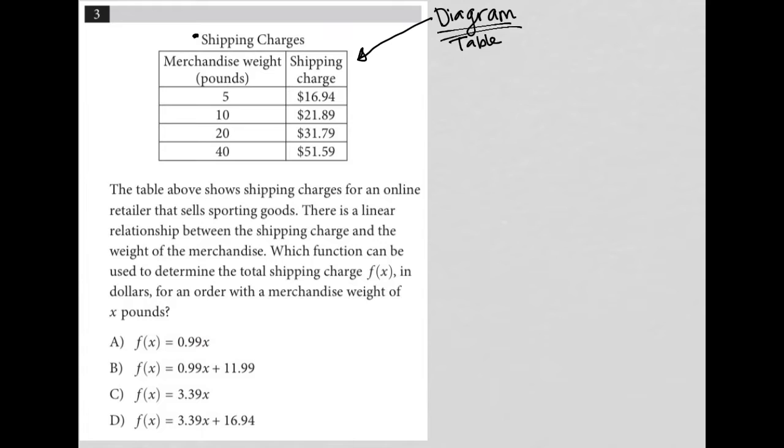So we have shipping charges as the heading here. Our first column is merchandise weight in pounds, and our second column is shipping charge. So based upon the weight, we have a different charge to ship the weight of that merchandise.